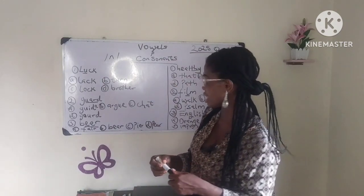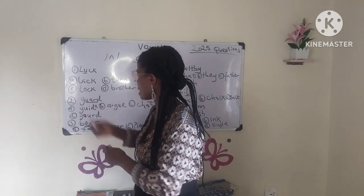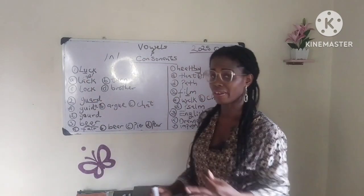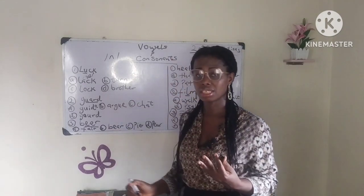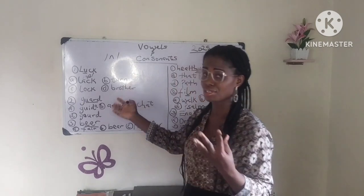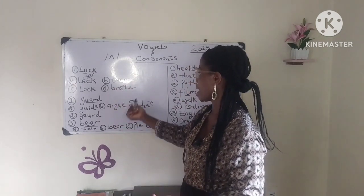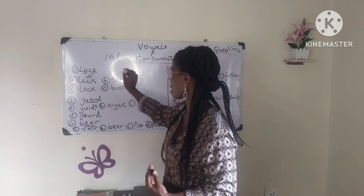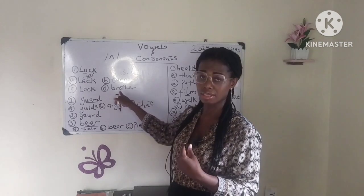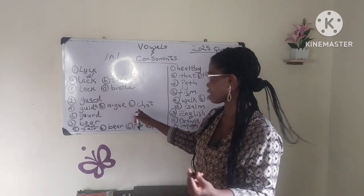Now let's look at the options. We have option A — the sound you have there is æ, which is incorrect. We have TURN for option B. When you have U-R between two consonants, you pronounce the U-R as ɜː. So the U-R in TURN is ɜː — the same sound you have in LURK, the same sound you have in CHURCH, etc. Now option C has the short ɒ sound, which is incorrect. So what we are looking for is the ɜː sound.